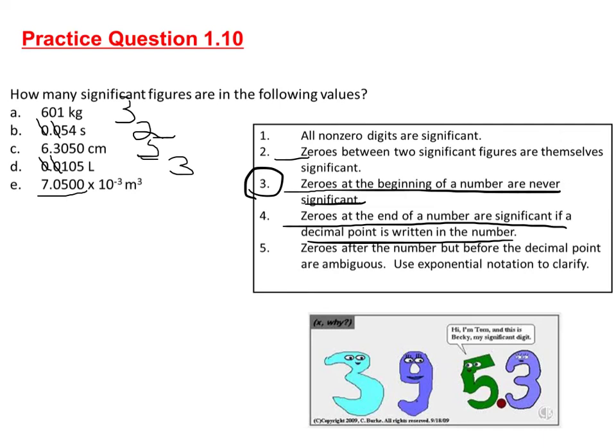The zero held captive by the seven and the five is significant. The trailing zeros are significant if the decimal point is written in the number, and it is. So there's five significant figures for that as well.